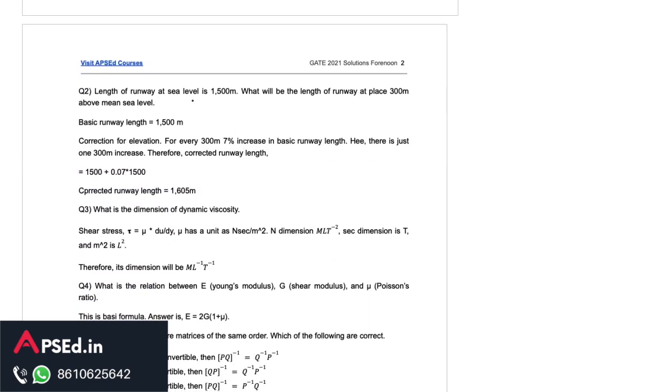Then the next one here they asked for the runway length. They have given the runway length at sea level and they have asked for a place which is at 300 meter above mean sea level. We know we increase the runway length by 7 percent for every 300 meter. We just have to add this percentage of the length. Based on that we get the length as 1605 meter.